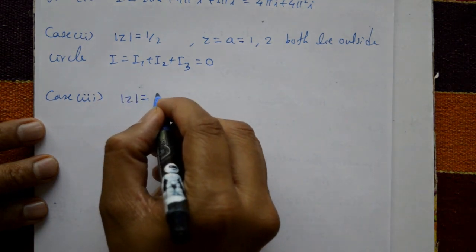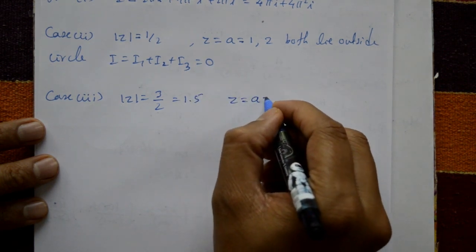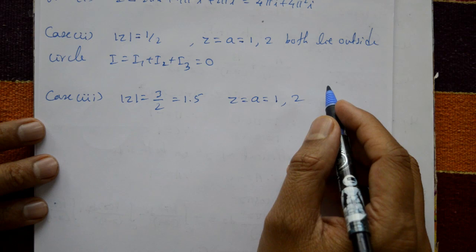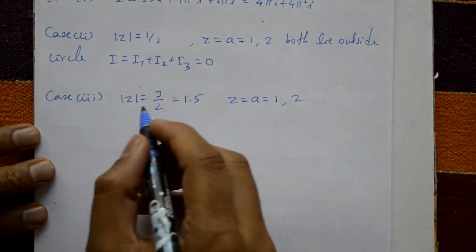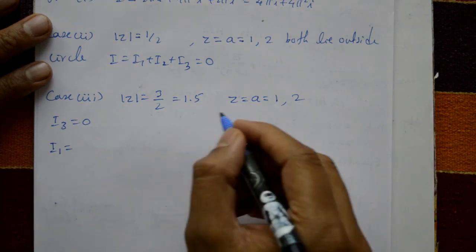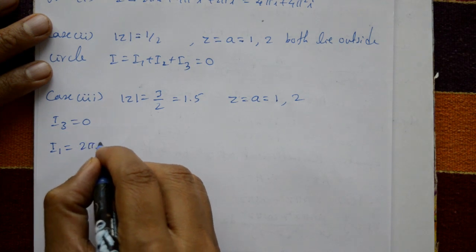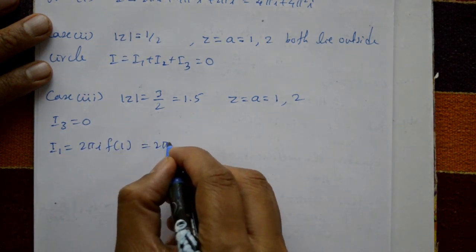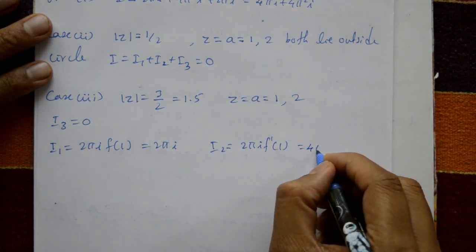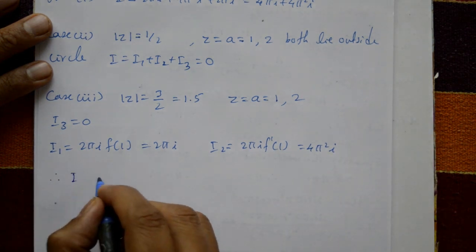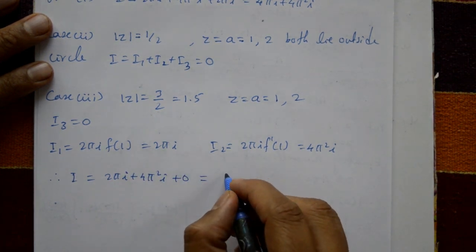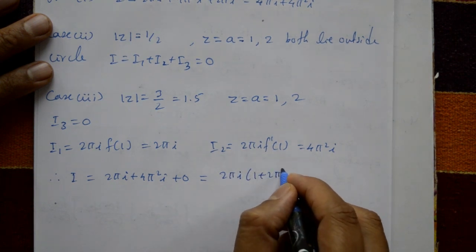Case 3: |z| = 3/2 (i.e., 1.5). Here z = 1 lies inside the circle but z = 2 lies outside, so I3 = 0. Applying Cauchy's formula for I1 and I2: I1 = 2πi f(1) = 2πi, and I2 = 4π²i (already computed). Therefore I = I1 + I2 + I3 = 2πi + 4π²i + 0 = 2πi(1 + 2πi). This is the required solution.